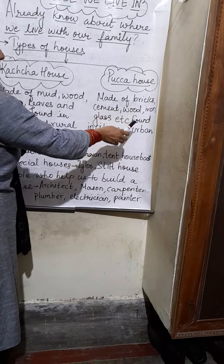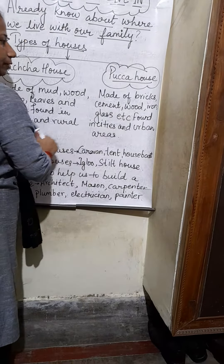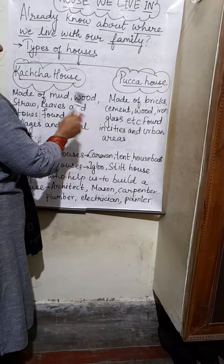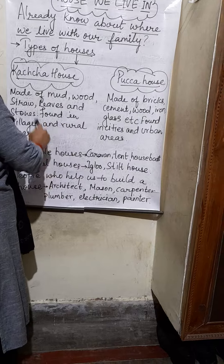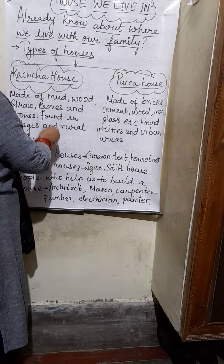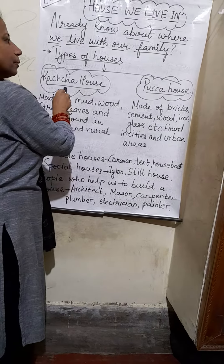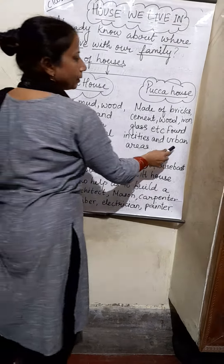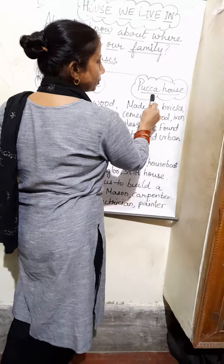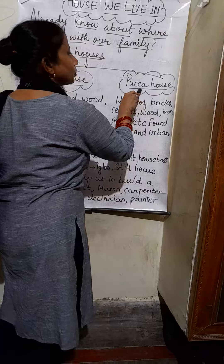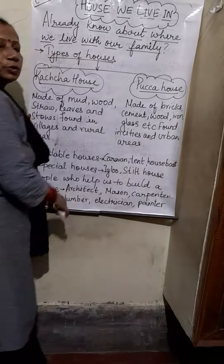Pucca houses are used in cities, while Kaccha houses are used to live in rural areas. In the rural areas, people use this type of house.